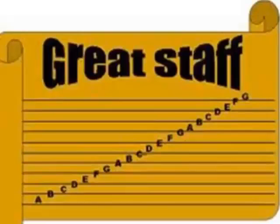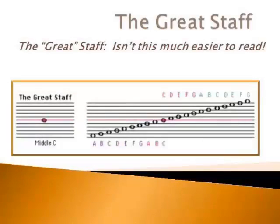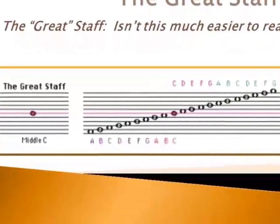Eventually, what happened is the middle line was taken out. The middle line is where middle C is. It made our staff much easier to read, because we have five lines, a space, and five lines. And of course, the top five lines became the treble clef, and the bottom five lines became the bass clef, and middle C, we just add a line whenever we need it.